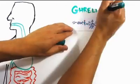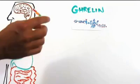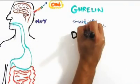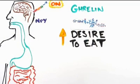When your stomach is empty, it releases a hormone called ghrelin. Ghrelin interacts in the brain with the neurotransmitter NPY and turns on the desire to eat.